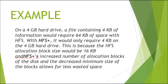Example: On a 4GB hard drive, a file containing 4KB of information would require 64KB of space with HFS. With HFS Plus, it would only require 4KB on the same 4GB hard drive. This is because HFS allocation block size would be 16KB, while HFS Plus increased the allocation blocks and decreased the minimum block size, allowing for less wasted space.